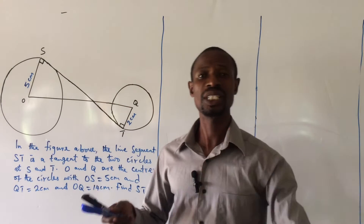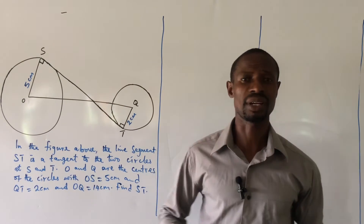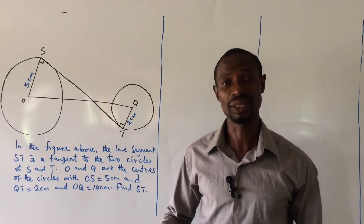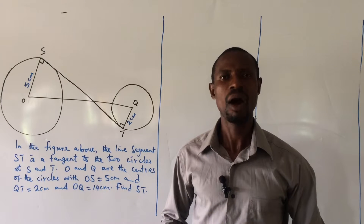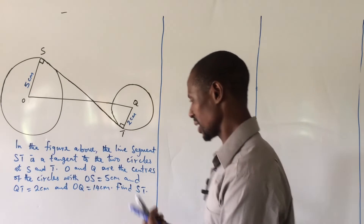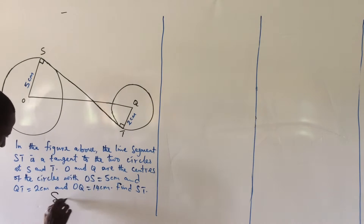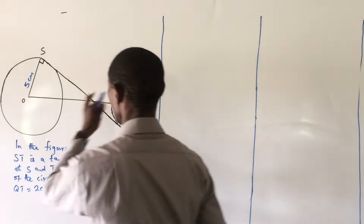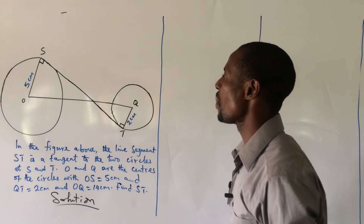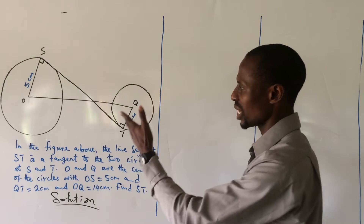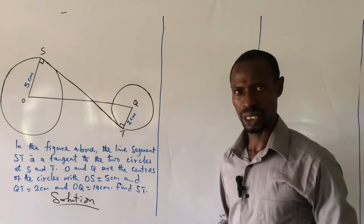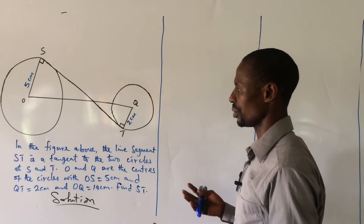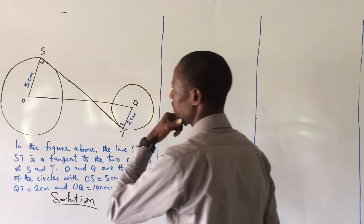Before we take our solution, if you are new to this channel kindly subscribe and turn on the bell notification button so that you can get our new videos once they are uploaded. Now, for our solution to this challenge, from this diagram we have two circles and we are going to make use of the transverse common tangent to two circles — that's the theory we are going to use.